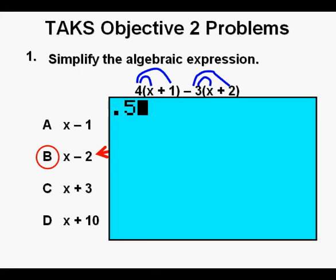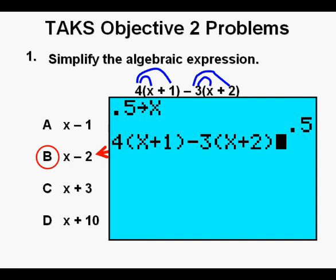We can also use a calculator method to check our answer or even solve if necessary. To check for expression equivalency, enter a number for x, and I have entered 0.5. Just don't use 0, 1 or 2. Next, press the storage key above the on key at the lower left on the keypad. Then press the x key between alpha and stat. Press Enter. Now, enter the original expression as written, 4 times quantity x plus 1 minus 3 times quantity x plus 2. Press Enter.